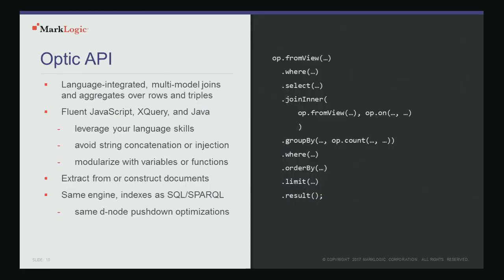Here on the left is a JavaScript Optic query. You can see it uses standard JavaScript syntax — any JavaScript programmer will understand what's going on. We're chaining calls to build up the query. We start with a view, apply a filtering condition to get rows where a condition is true, select the columns we want, join on another view specifying join keys, group on a key and calculate aggregates over the detail rows within the group, and then apply more filtering conditions, order, and limit.